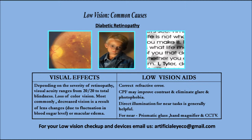What are the low vision aids that can help a diabetic retinopathy person? Correct the refractive error — although because of fluctuation in sugar, the person may have clarity of vision at times and blur at other times with the same specs, you should still correct the refractive error. CPF filter lenses may improve contrast and eliminate glare and photophobia. Direct illumination for near tasks is generally helpful, and you can also prescribe prismatic glasses, handheld magnifiers, and CCTVs.